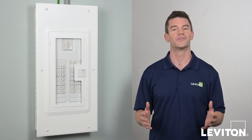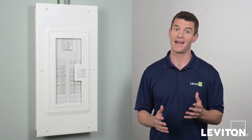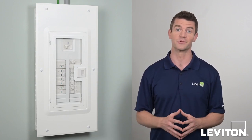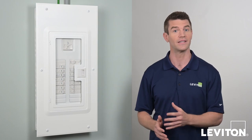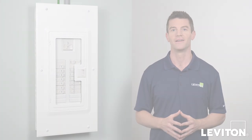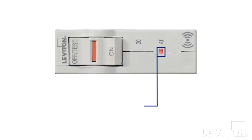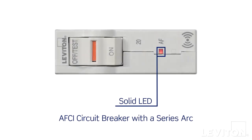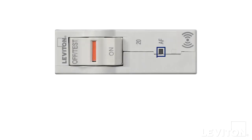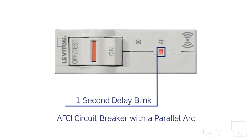If the arc fault circuit breaker experiences an arc fault, it can actually tell the difference between a series and a parallel arc. During a series arc, the AF window will light up with a solid LED. If the arc fault circuit breaker experiences a parallel arc, the AF window will display a blinking light with a one-second delay.